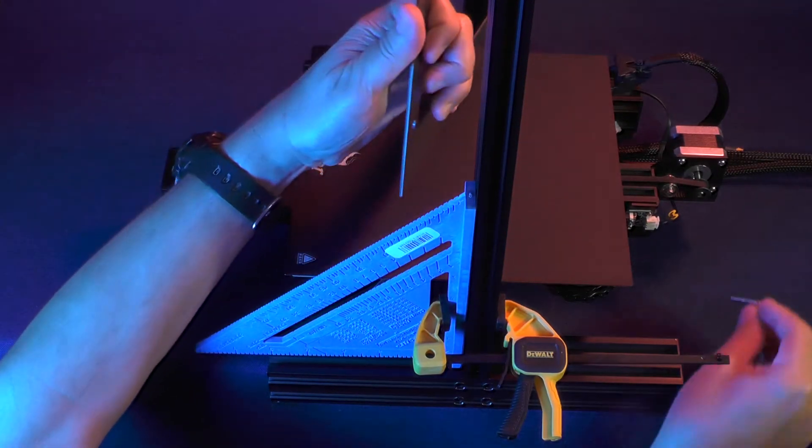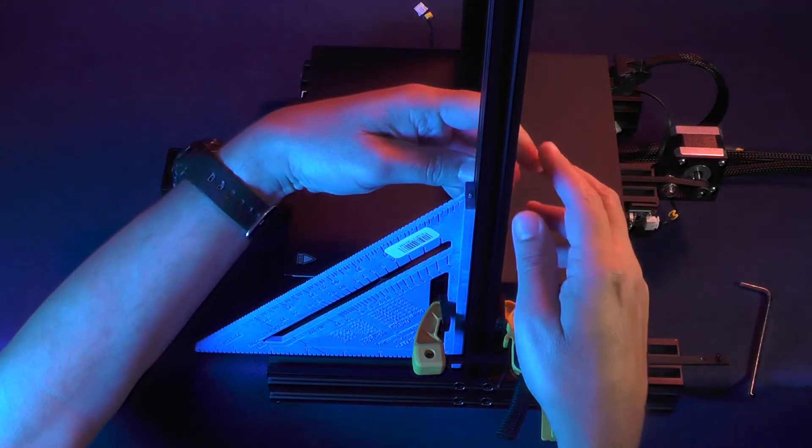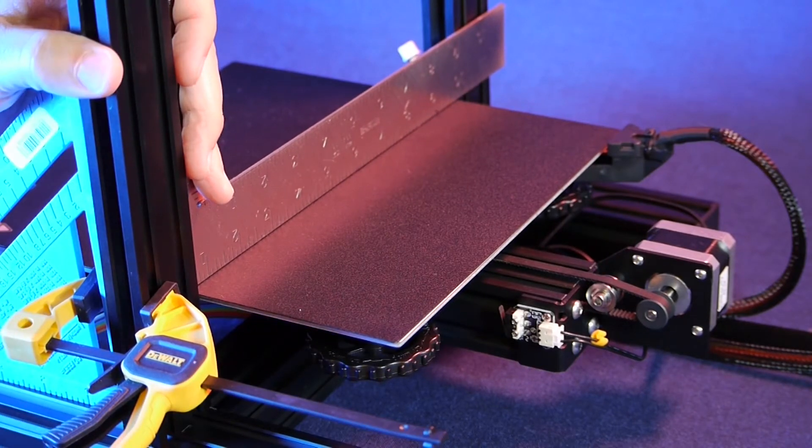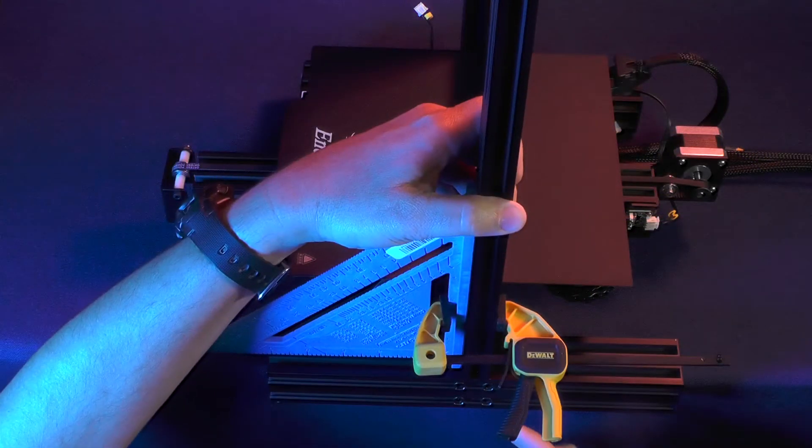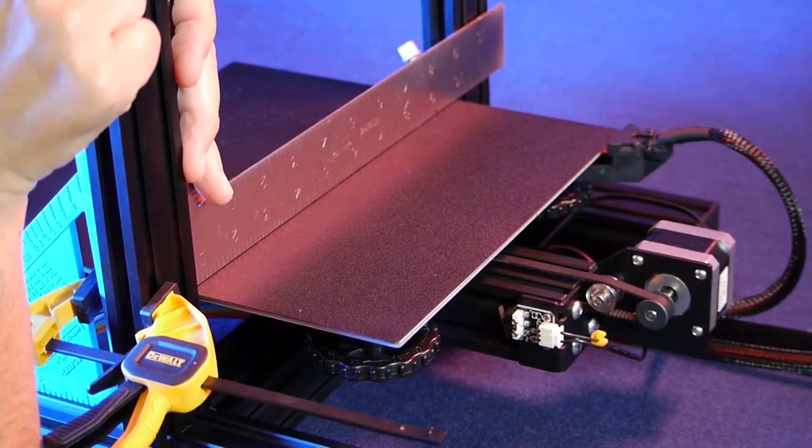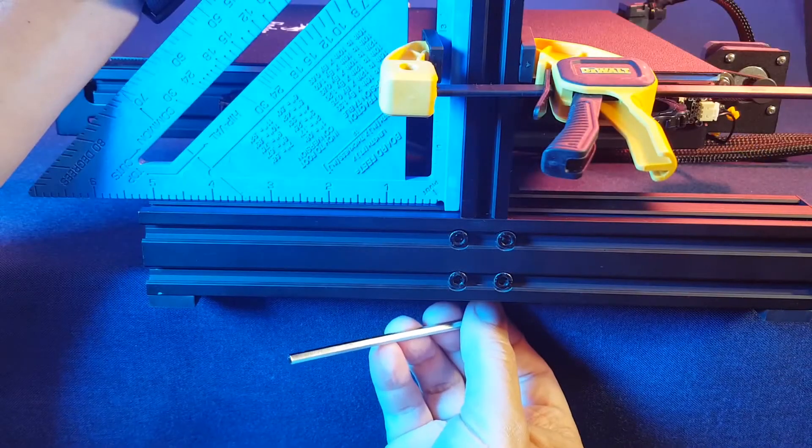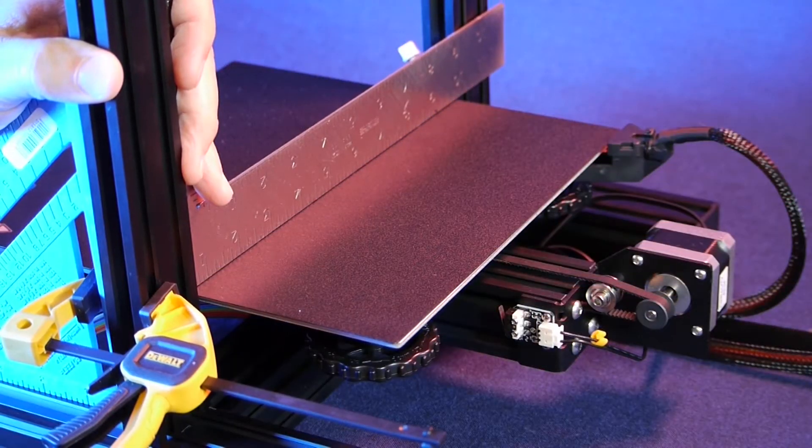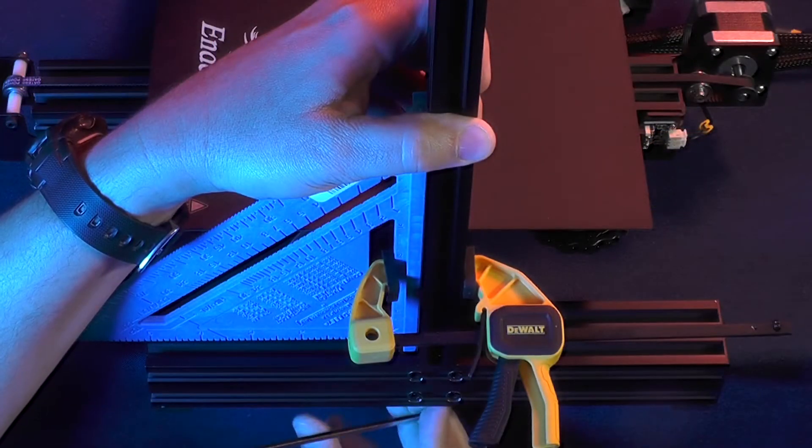So, now, let's do the same on the other side and you already know the drill. First, you tighten one screw, then you check to see if the square is perfectly flat with the build plate. If it's not, you tighten the other one and you keep going back and forth until both screws are tight and the 2040 aluminum extrusion is at a perfect 90 degree angle in relation to the build plate.